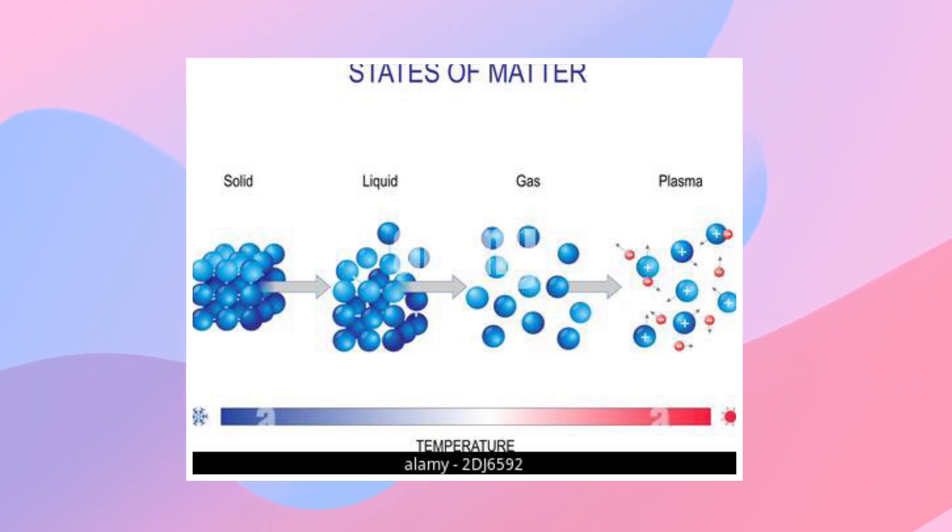There are also a few other ways for matter to change states, such as sublimation, which is when a solid turns directly into a gas. An example of this is dry ice, which is a solid that turns to gas at room temperature.